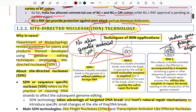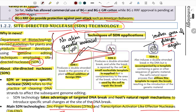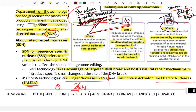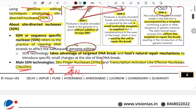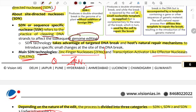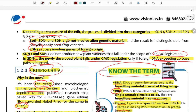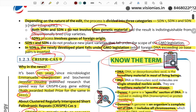SDN — Site Directed Nucleases — full form: SDN1, SDN2, SDN3. SDN1 and SDN2 do not introduce alien genetic material. SDN3 contains foreign origin genetic material and falls under GMO legislation, requiring stricter regulation — especially if foreign DNA exceeds 20 base pairs. SDN technology involves DNA editing through cleaving DNA strands; examples include zinc finger nucleases and TALENs (transcription activator-like effector nucleases).